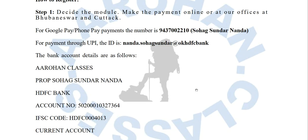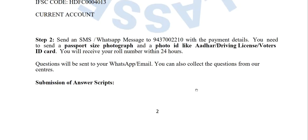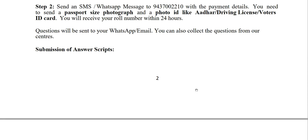To register, first decide which module you want to take. You can make the payment either online or by visiting the offices at Cuttack and Bhubaneswar. Once you have made the payment, send an SMS or WhatsApp message to 943-700-2210 with the payment details and the subjects you are going to take. You also need to send one passport-size photo and one photo ID card, such as a driving license or voter card. Once all documents and payment information are received, you will get your roll number within 24 hours, and questions will be delivered via WhatsApp or email as per your preference.